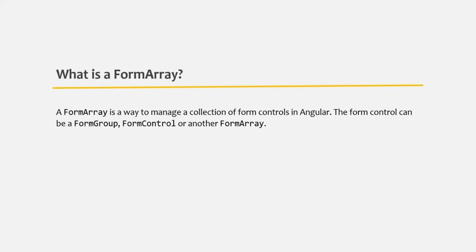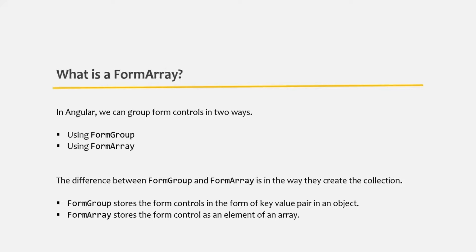We have learned that we can also create a collection of form controls by using form group. So how is form array different from form group? In Angular, we can group form controls in two ways: either using form group or by using form array. The difference is in the way they create the collection. Form group stores the form controls as key-value pairs in an object, whereas form array stores the form controls as elements of an array.